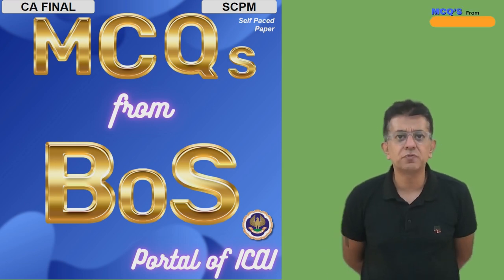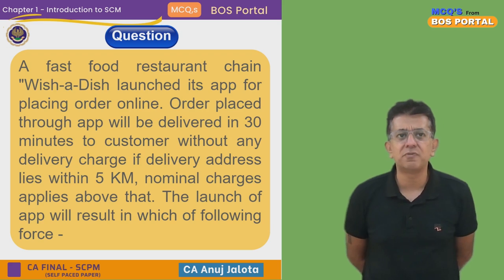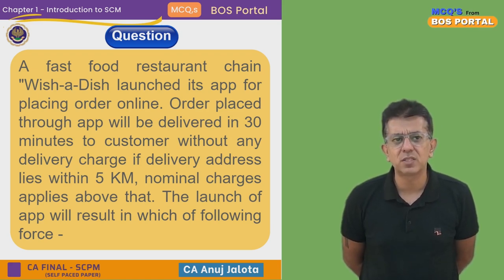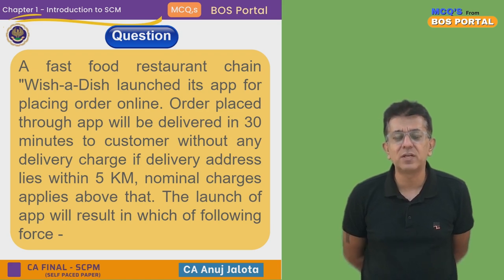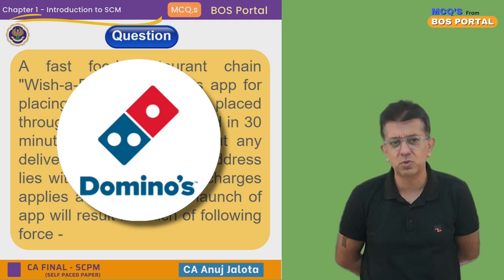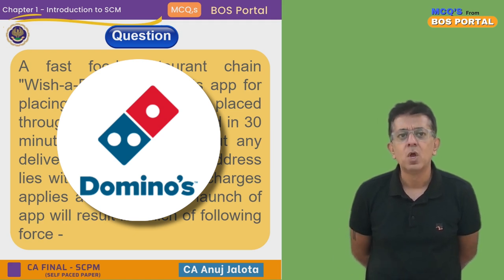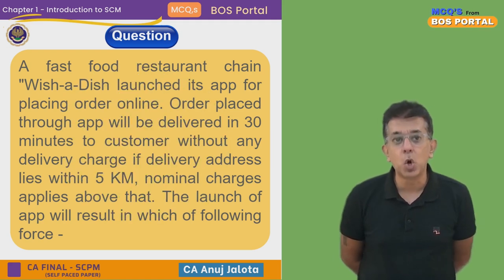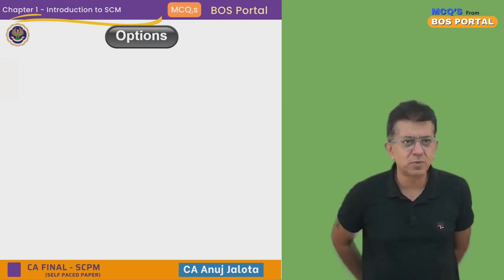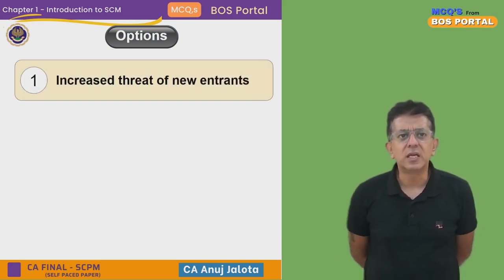The question for today is: a fast food restaurant chain 'Wish a Dish' wants to launch its app for placing orders online. Orders placed through the app will be delivered in 30 minutes to the customer without any delivery charge if the delivery address lies within 5 kilometers — similar to how Domino's used to deliver pizza in 30 minutes. Nominal charges apply after that. The launch of the app will result in which of the following Porter's Five Forces?